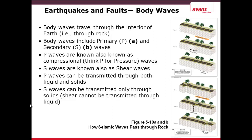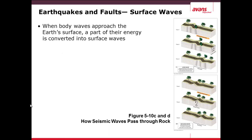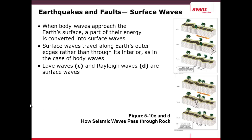Secondary waves only pass through solids. Conversely, we have surface waves, of two different types. This is when energy is converted from underground to the surface. Love waves and Rayleigh waves are the two types. A love wave travels side to side like a snake going along the ground, while a Rayleigh wave moves more like a wave you would see in the water at the beach.